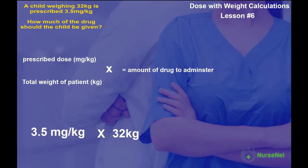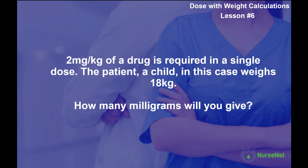So the heavier the patient, the more milligrams of the drug that will be given. Let's do an example. Two milligrams per kilogram of a drug is required in a single dose. The patient is a child and weighs 18 kilograms. How many milligrams will you give? It's a fairly straightforward calculation, but let's work through it as though we're sitting our JUGS calculation test without a calculator.